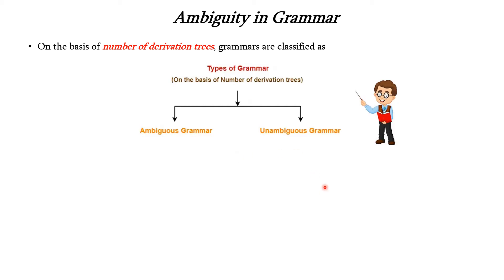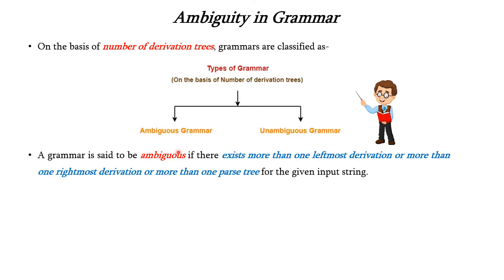A grammar is said to be ambiguous if there exists more than one leftmost derivation, or more than one rightmost derivation, or more than one parse tree for the given input string. So if any of these three criteria exist, then it is called an ambiguous grammar.